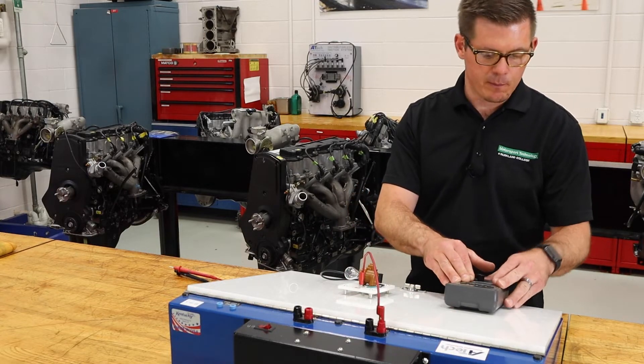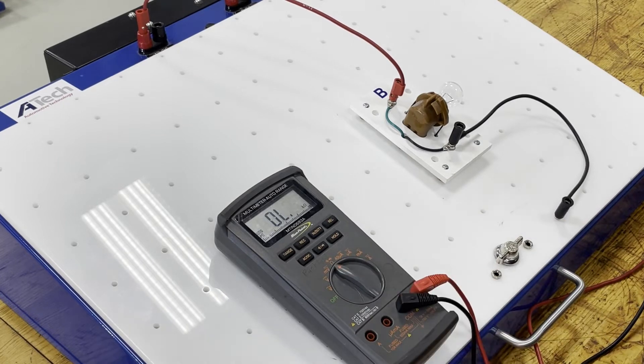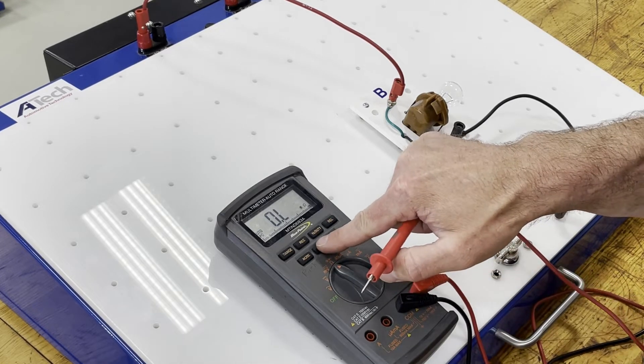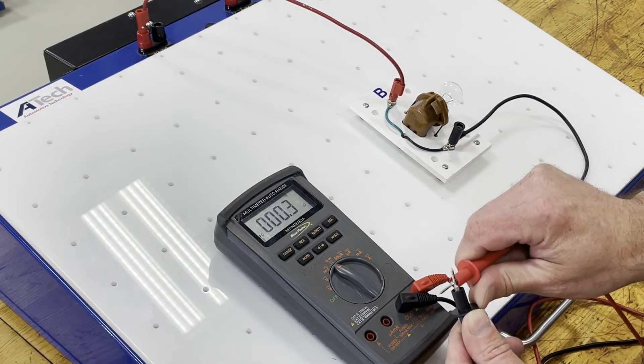So first my meter here, before I use it I want to make sure that everything is good. I'm going to go to my continuity or resistance check here. I could use the continuity function, push this button one time, connect my leads, I should hear a beep.